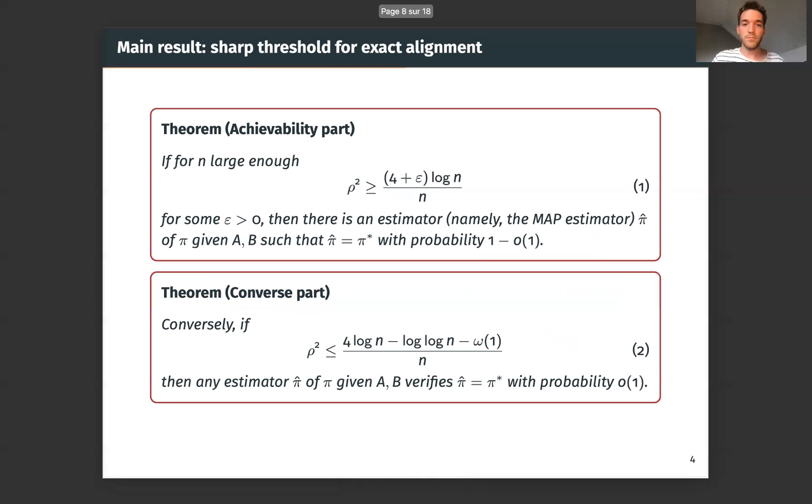So the result is in two parts. First, the achievability part. If ρ² is greater than (4 + ε) log n / n, then the MAP estimator succeeds in the sense that π̂ is equal to π* with probability tending to one when n goes to infinity. And conversely, if ρ² is less than 4 log n / n, you see the correction terms here, then there's no way that we can recover exactly our planted structure. Any estimator will not be able to recover our permutation π* with probability tending to one.